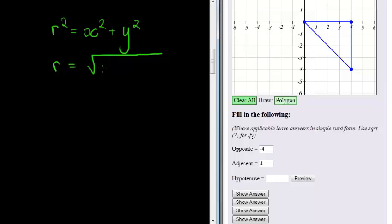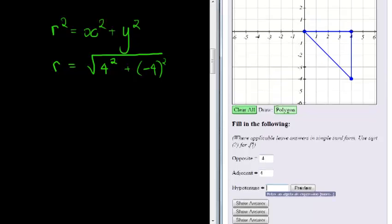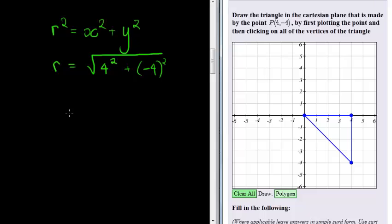But the hypotenuse will always be positive no matter what direction it is. It's 4² plus y is negative 4 squared. Where do I get that from? That's my coordinates of my point. Remember x and y, the coordinates of my point. So what do I get? I get the square root of 16 plus 16 which equals the square root of 32.